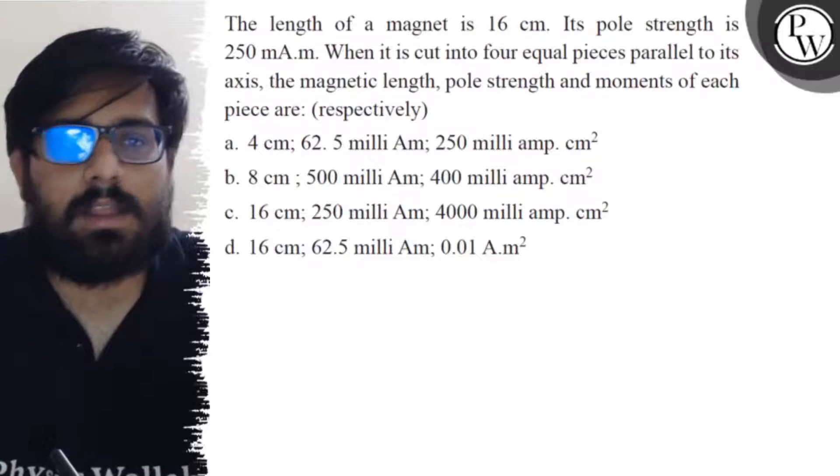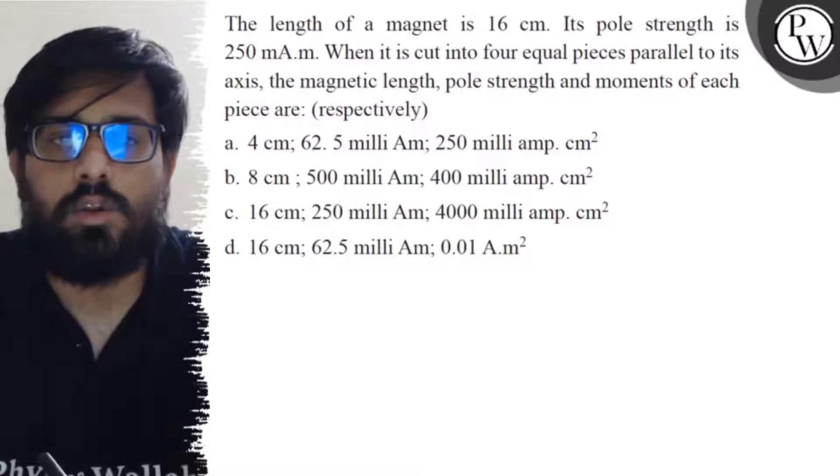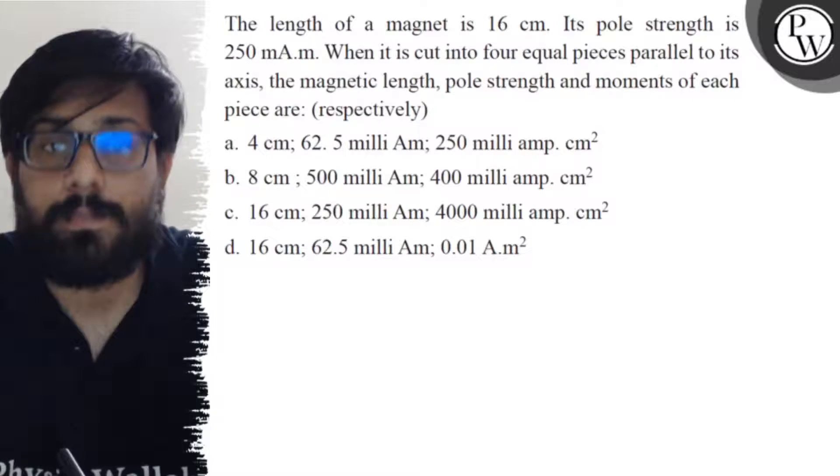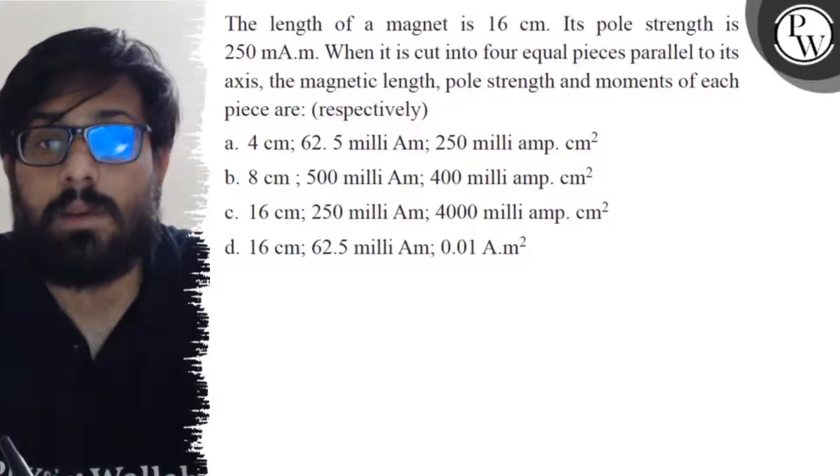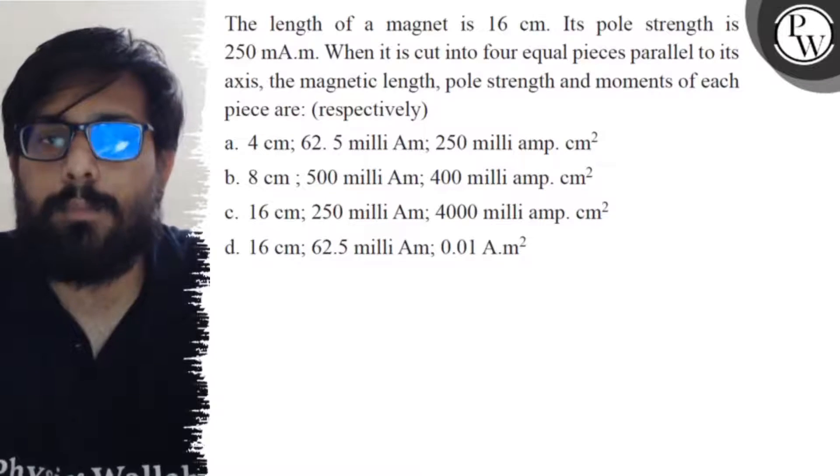Hello students, let's see the question. The length of a magnet is 16 centimeters, its pole strength is 250 milliampere-meter. When it is cut into four equal pieces parallel to its axis, the magnetic length, pole strength,